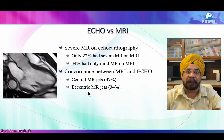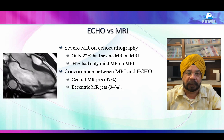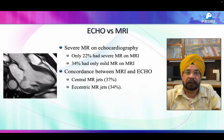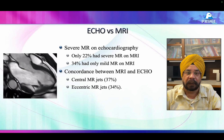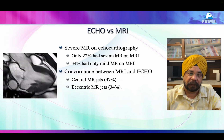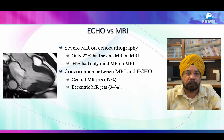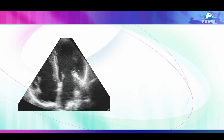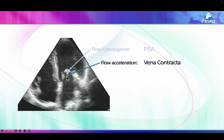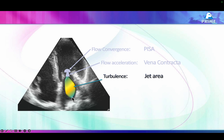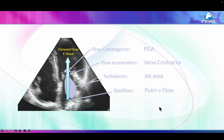We need to wake up. We thought whether a jet is central or eccentric would make a great difference, but it really doesn't significantly improve accuracy compared to CMR. This is a wake-up call. To make a proper assessment of mitral regurgitation, please follow these tips. The methods include: proximal isovelocity surface area (PISA), vena contracta — which is the narrowest portion of the jet — the jet area, pulmonary venous flow, and the E wave of the mitral inflow.